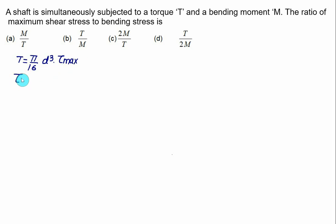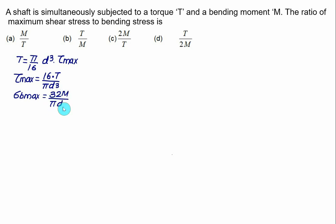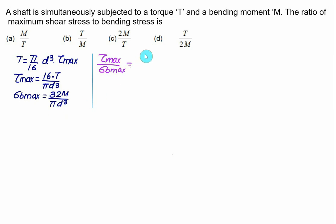So tau-max equals 16T divided by pi times d-cubed. Similarly, maximum bending stress sigma-b-max equals 32M divided by pi times d-cubed. The ratio of tau-max to sigma-b-max gives us 16 times T over 32 times M. The pi and d-cubed terms cancel, leaving T divided by 2M. Choice D is correct.